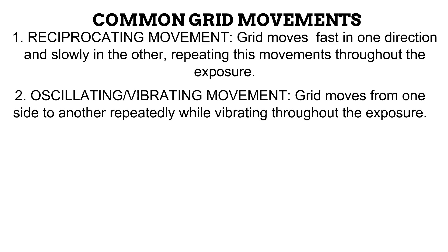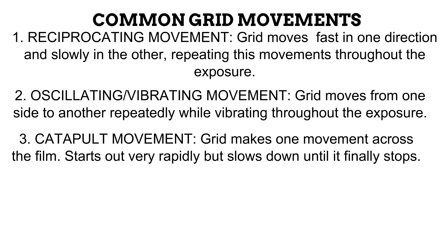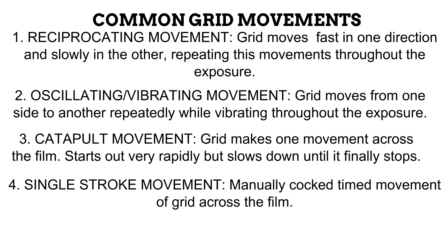Next is the catapult movement. Unlike the first two, the catapult movement makes just one movement across the film, starting out very fast but slowing down until it stops at the end of the exposure. Last is the single stroke movement, where the radiographer manually causes this movement by pulling a cock lever on the device before the exposure. It is, however, the less common movement today.